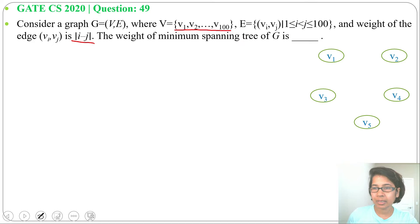The weight will be |i - j|. v1 to v2 weight will be 1. Next v1 to v3 weight will be 2. v1 to v4 weight will be 3 (4 - 1 = 3). Next v1 to v5 weight is 4 (|1 - 5| = 4). v2 to v3 weight will be 1. v2 to v4 weight is 2. v2 to v5 weight is 3.